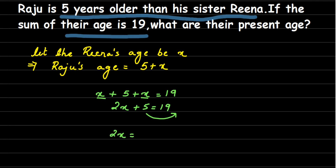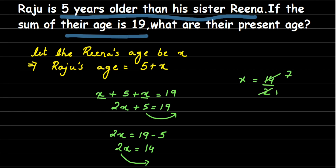Now send the 5 to the other side — when you transpose, the sign changes from positive to negative. So we get 2x = 19 minus 5, which is 14. Then transpose the 2 to the other side; since it's multiplication it becomes division, so x = 14 divided by 2, which gives x = 7.